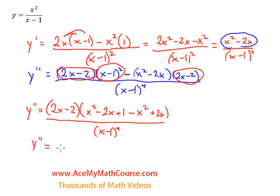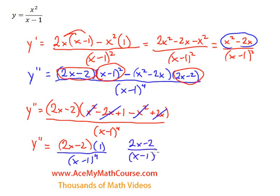So y double prime will be 2x minus 2 over here. These can cancel out. We're multiplying it by 1. Oh, how nice. And x minus 1 to the 4. So here's what we have. 2x minus 2 over x minus 1 to the 4.